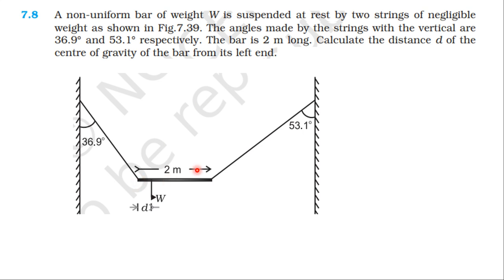In the bar, the mass is non-uniformly distributed. The non-uniform rod length is 2m. The non-uniform rod is suspended by two strings. The first string makes angle with vertical 36.9 degree, second string makes angle with vertical 53.1 degree.